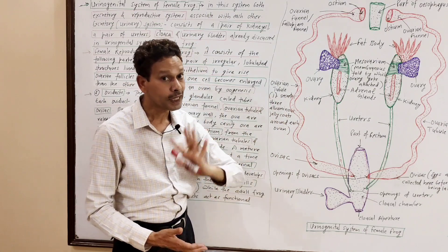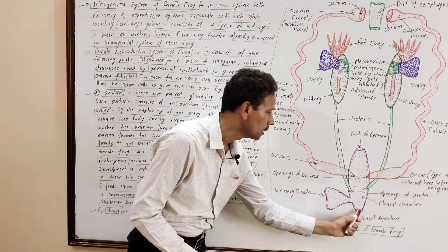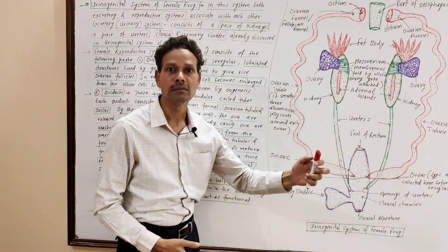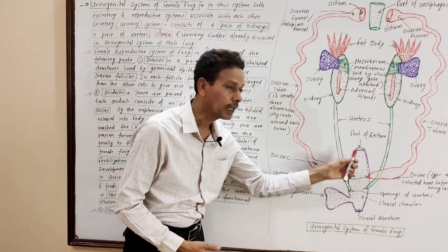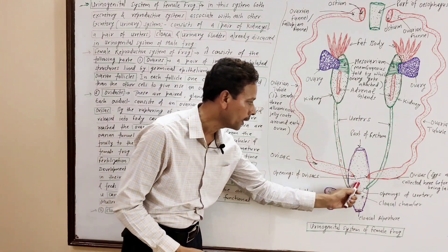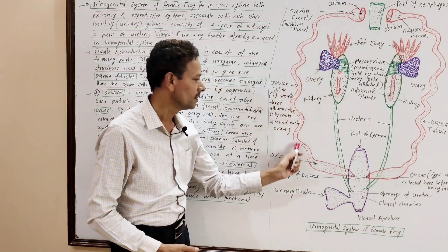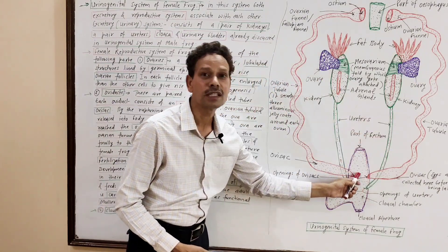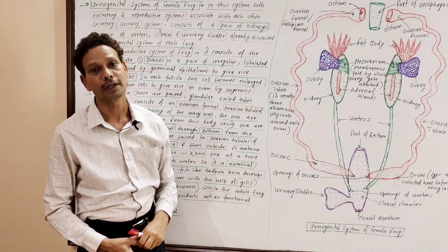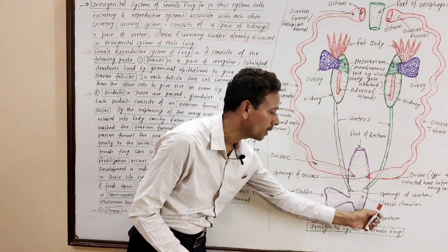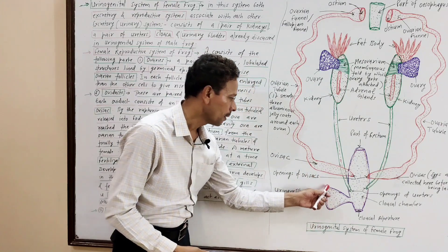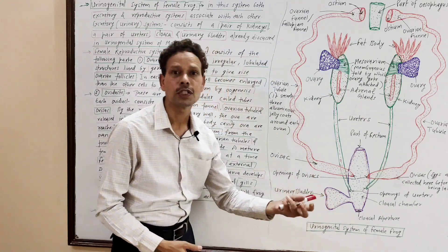The next part of the excretory system is the cloaca. This is a common chamber in which the rectum opens. The ureters also open here, as well as the reproductive system, in this common cloacal chamber. The cloaca opens to the outside by a cloacal aperture. The excretory system also includes a bilobed urinary bladder which stores urine.